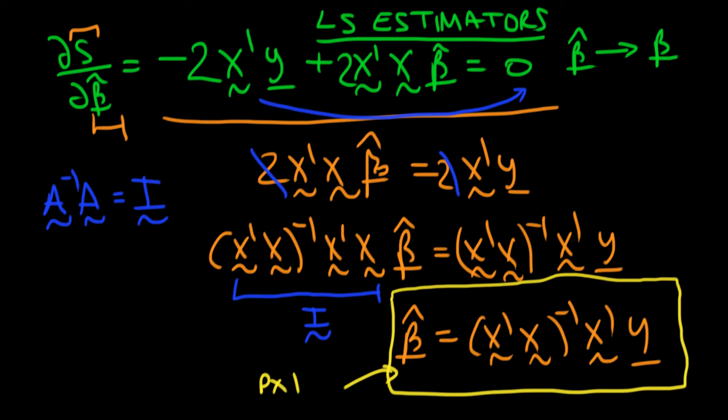Something I should say about this particular expression is because it contains an inverse matrix, this basically assumes that beta hat only exists if the matrix x prime x is non-singular. If x prime x is singular, then this tells me that the inverse doesn't exist, so I can't actually derive least squared estimators for the parameters in that case.